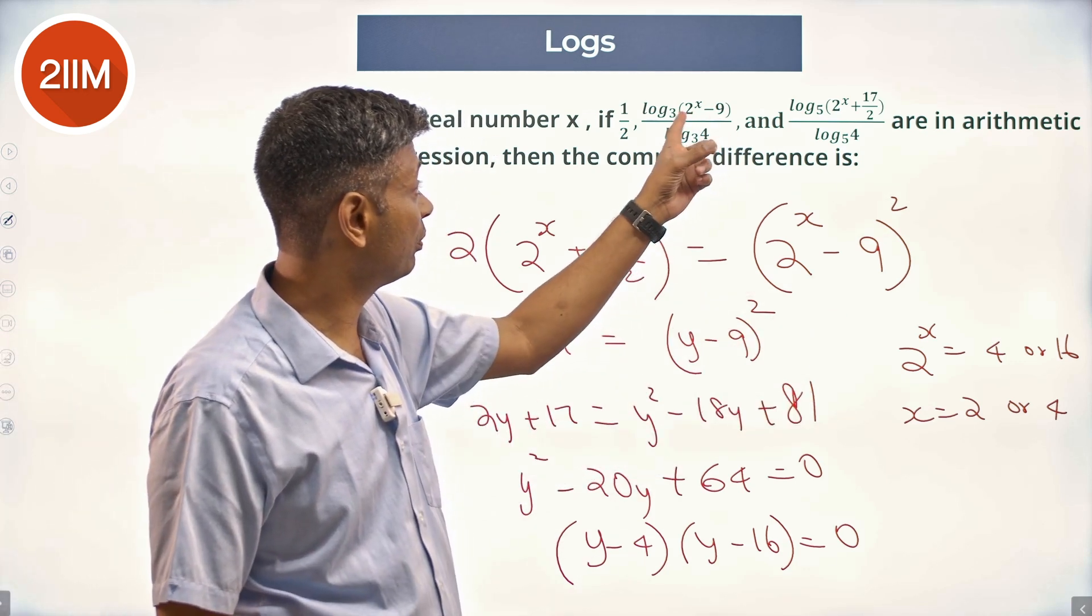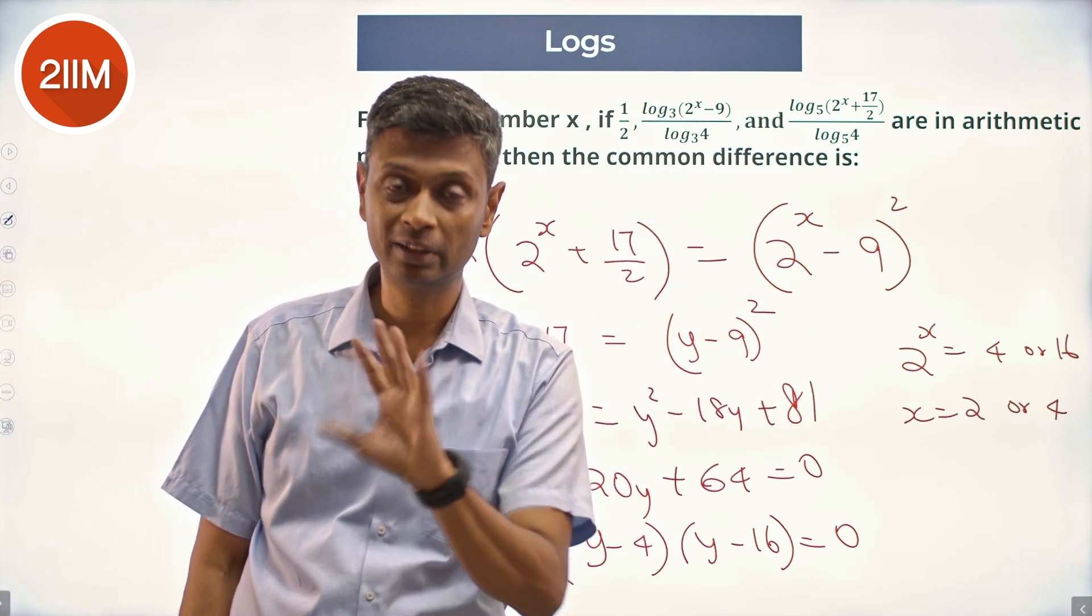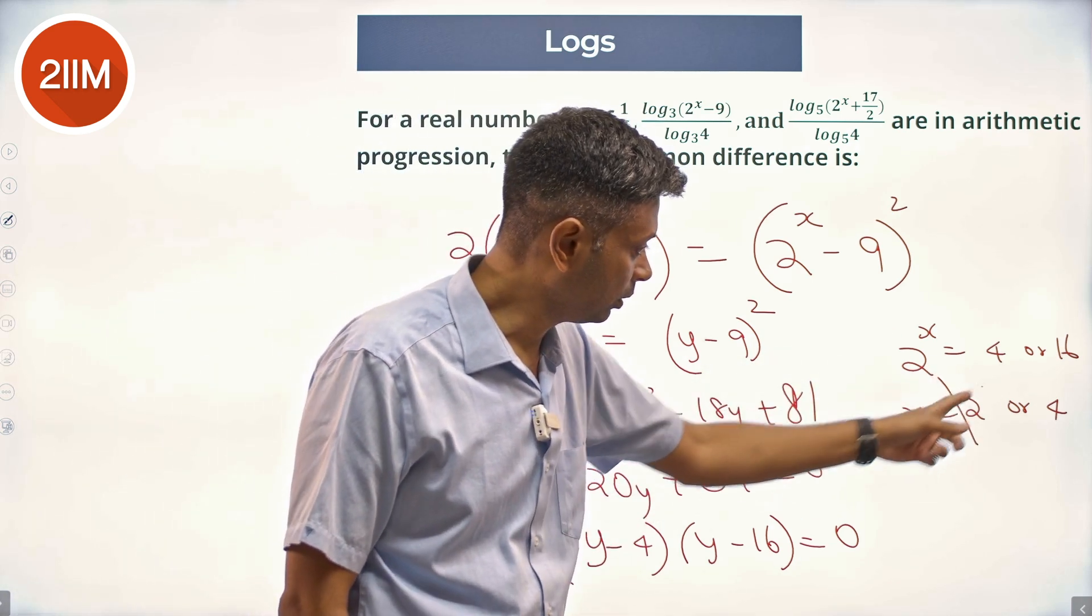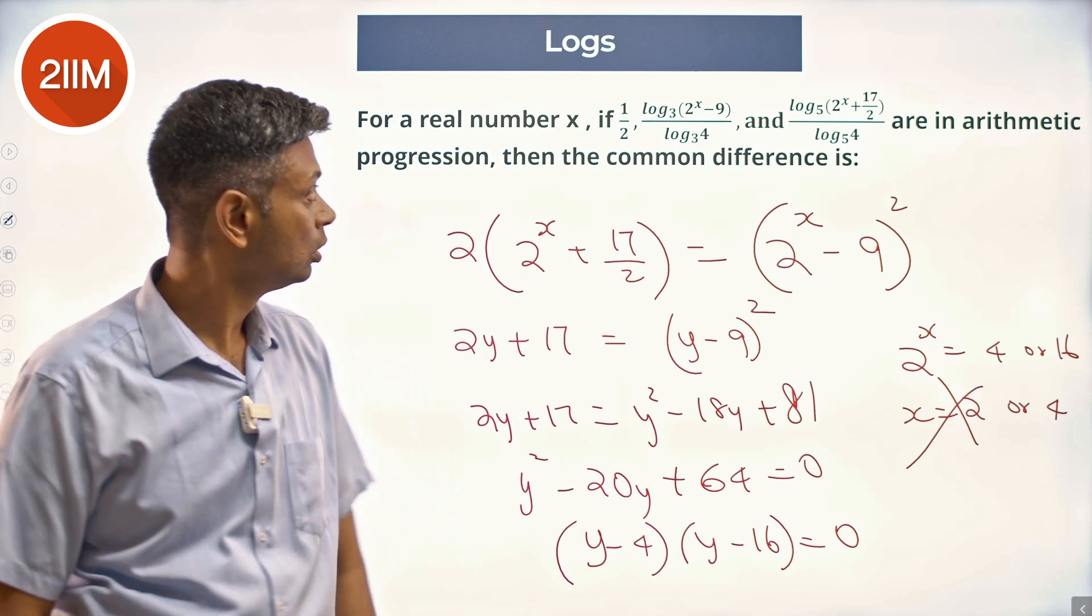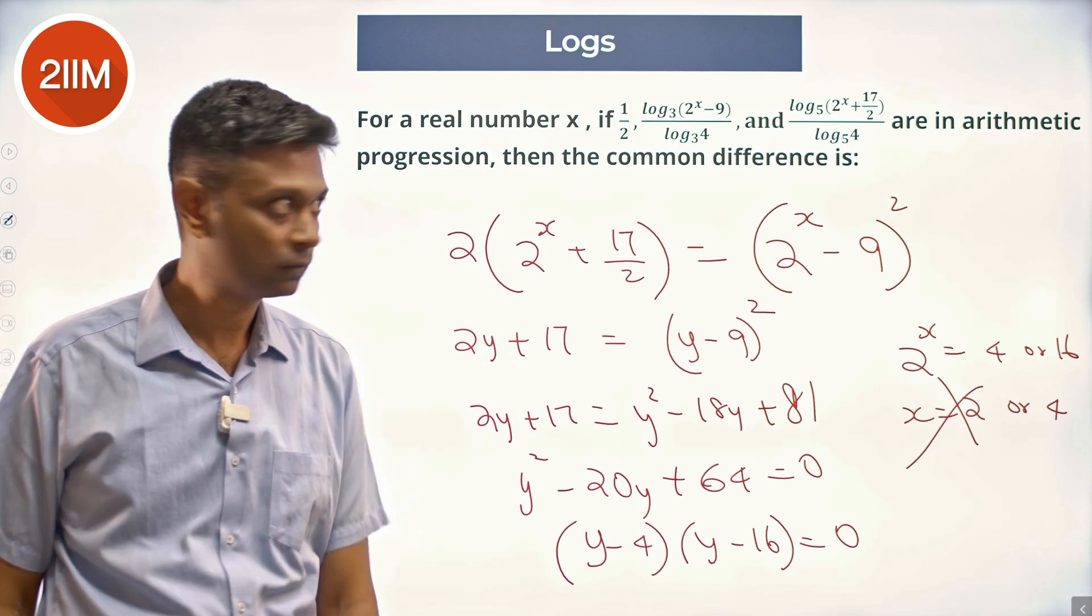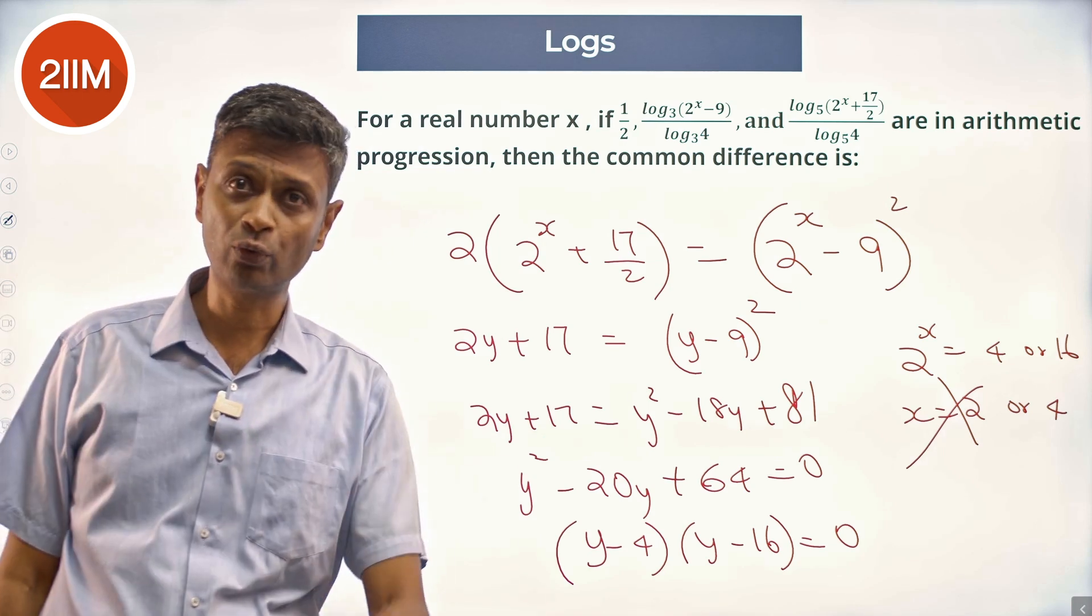If x were 2, 2^x would be 4. 4 - 9 is a negative number, I shouldn't be worrying about it. Therefore 2 is not possible, so x has to be 4. 2^x - 9 has to be positive, 2^x + 17/2 has to be positive. Therefore we know that x is 4.